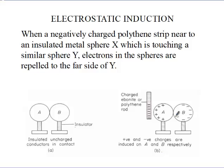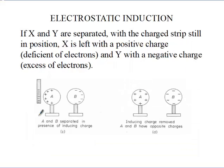Because the negative charges are repelling them and the negative charges are attracting the positive charges. Now with the charged polythene rod still in place, we separate the two spheres.